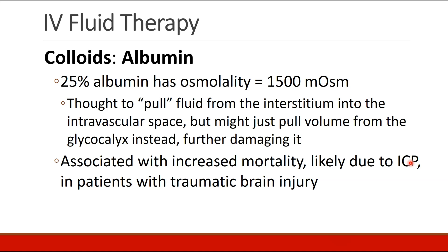We also have 25% albumin, which has an osmolarity of 1500 milliosmol. The idea was that a small amount of 25% albumin would use its oncotic pressure to pull fluid from the interstitium back into the intravascular space. In fact, this is probably not the case — it may actually just be pulling volume out of the glycocalyx and causing further damage. Albumin has actually been associated with increased mortality, probably due to increased intracranial pressure, in patients who have traumatic brain injury.